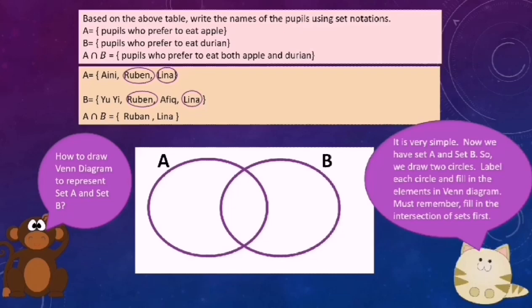We label this circle as set A and this circle as set B. You must remember to fill in the intersection of sets first. The intersection of set A and B are Ruben and Lina, so we fill those in first. For set A, besides Ruben and Lina, we also have Aini, so Aini goes in the A-only part. Make sure every element has a dot at the front.